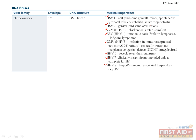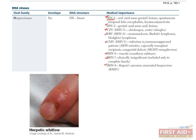Most adults are infected with HSV-1, acquired through saliva transmission, but which usually results in an asymptomatic infection. Initial symptoms may include vesicular ulcerating lesions of the mouth, gingivostomatitis, the eye, keratoconjunctivitis, or the hand, herpetic whitlow.